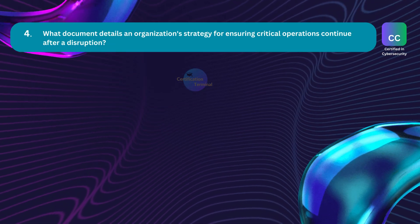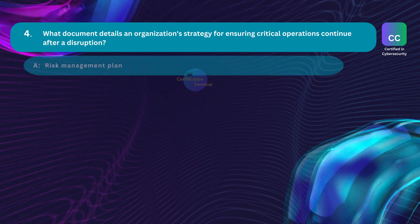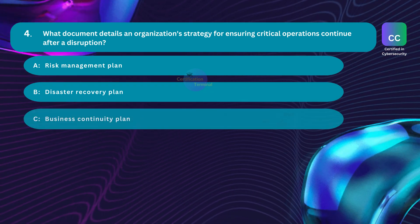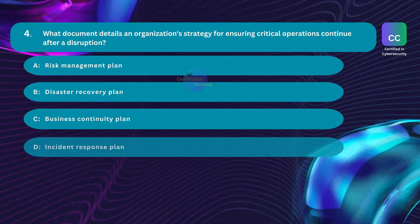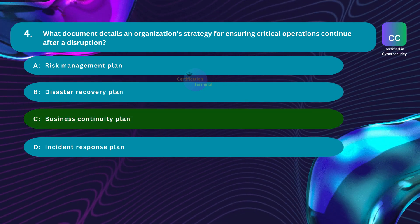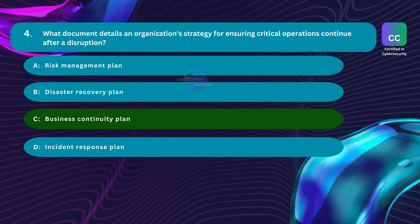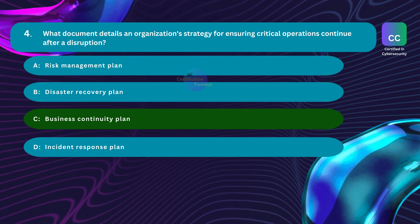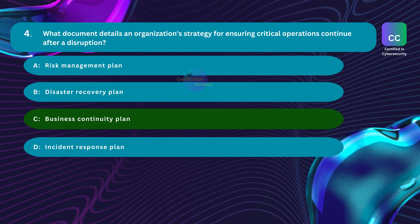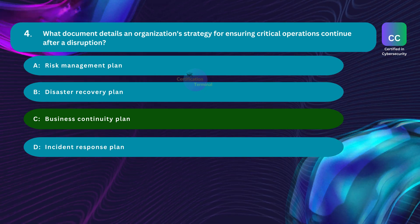Question number four: what document details an organization's strategy for ensuring critical operations continue after a disruption? Option A: risk management plan. Option B: disaster recovery plan. Option C: business continuity plan. Option D: incident response plan. The correct answer is option C: business continuity plan. While all these documents play crucial roles in organizational resilience, the business continuity plan specifically focuses on the strategy for ensuring critical operations continue after a disruption.